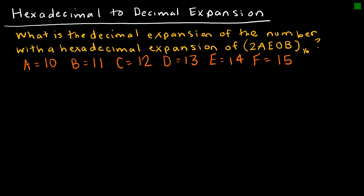Now let's look at a hexadecimal expansion. Hexadecimal uses a base of 16. The tricky part is that when we reach 10, we no longer have a single digit, so we use letters: 10 = A, 11 = B, 12 = C, 13 = D, 14 = E, and 15 = F. These are the values we'll use for the hexadecimal to decimal expansion.